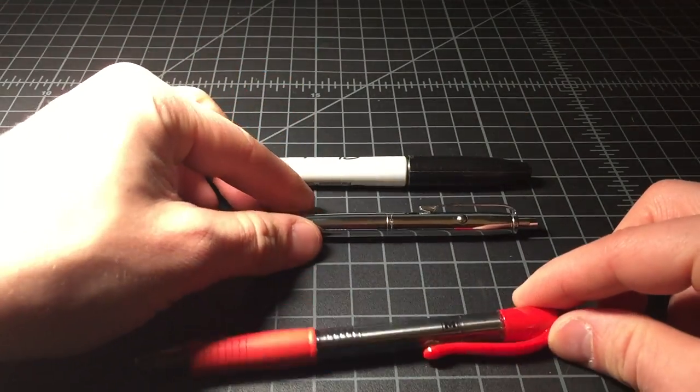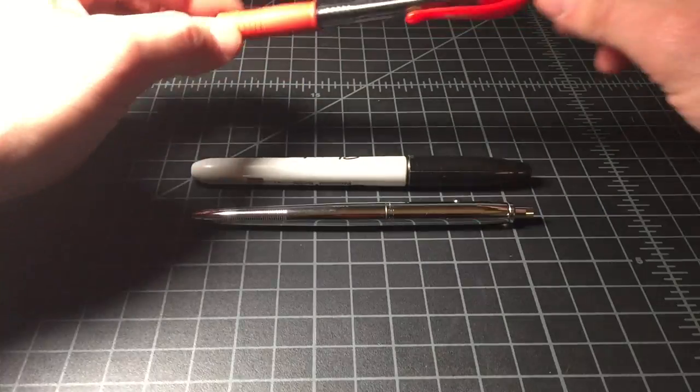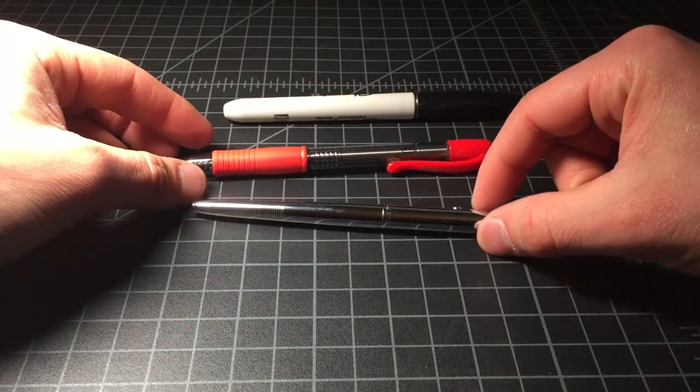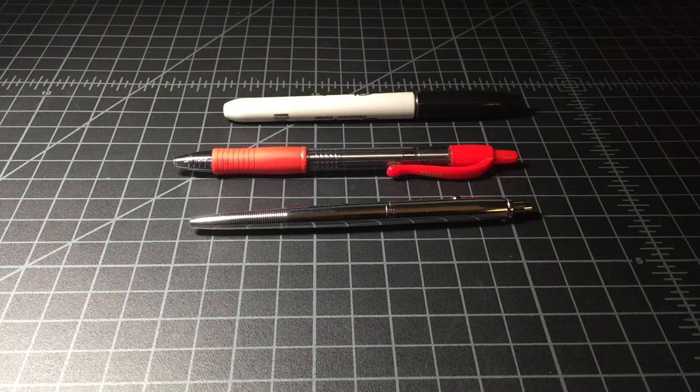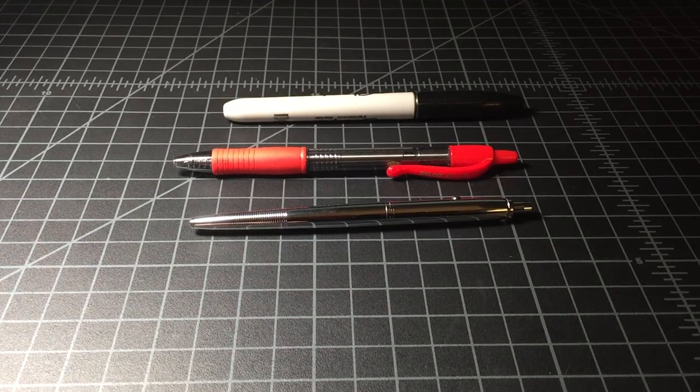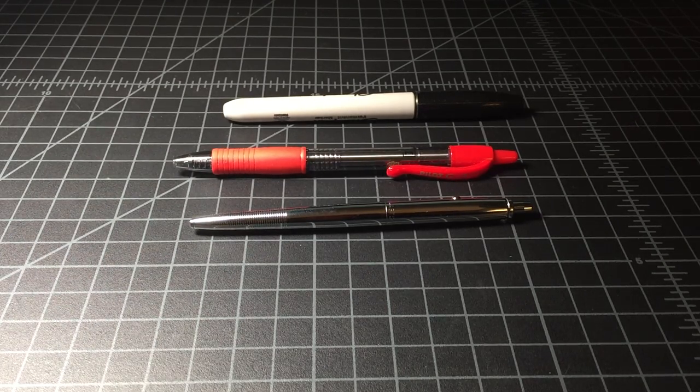So the Fisher has some nice weight to it because it's got that heavy-duty metal design. I believe a brass insert at the top, but it's a really thin, light, svelte pen.